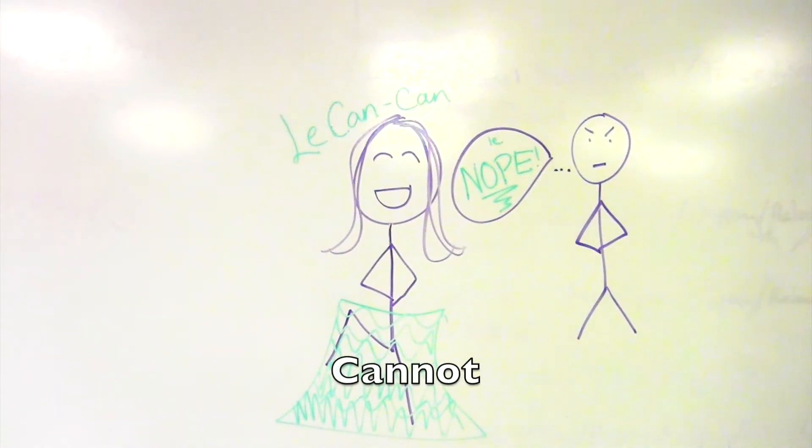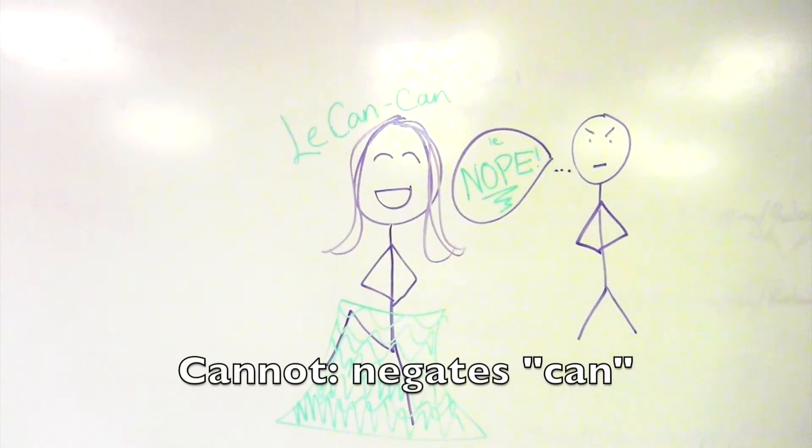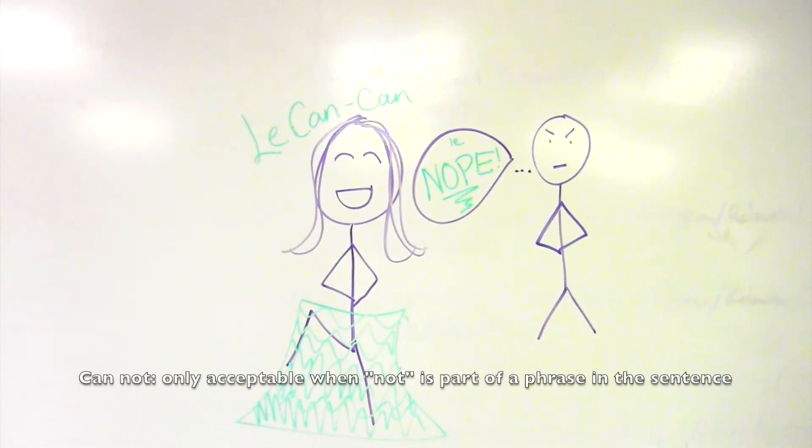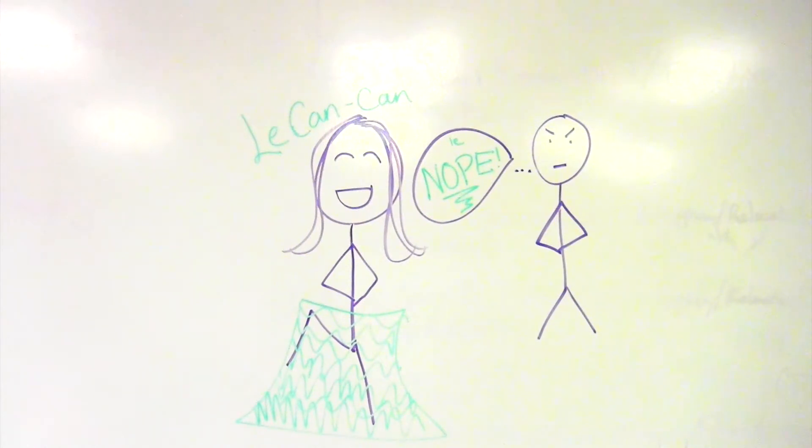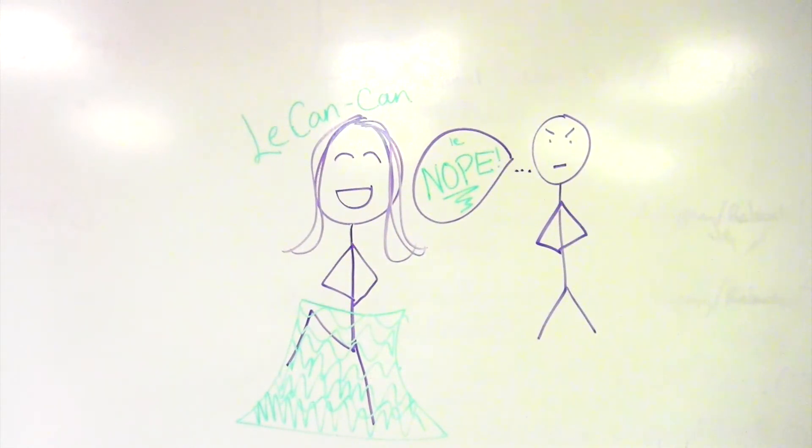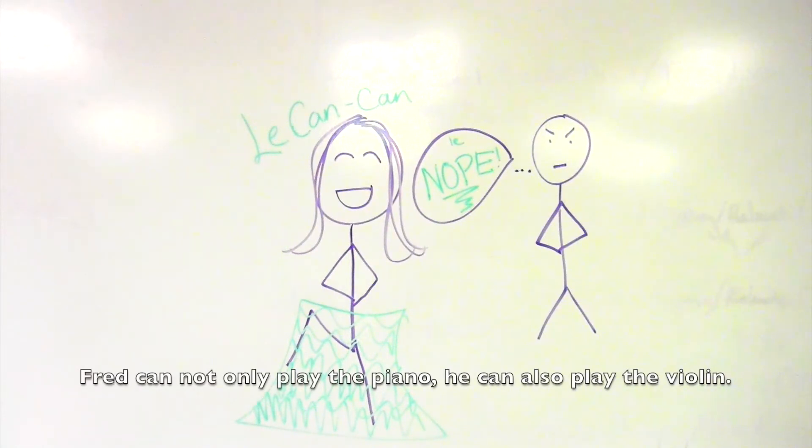Cannot as one word is a verb negating can, whereas can not with two words is a form of cannot, but it is only acceptable to use when the word not is part of another phrase. For example, as one word, one might say, Scarlet cannot go to school with this fever. But with two words, one could say, Fred can not only play the piano, he can also play the violin.